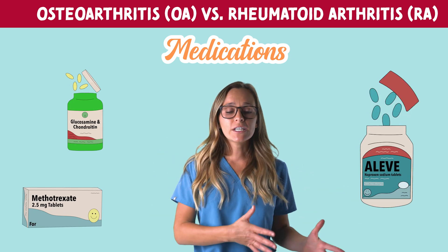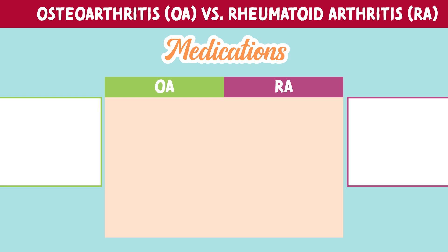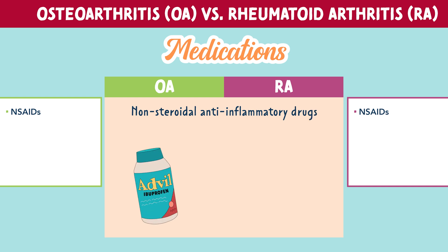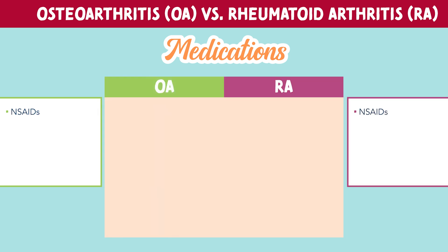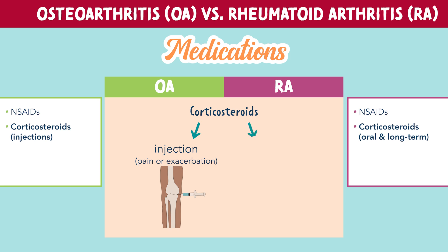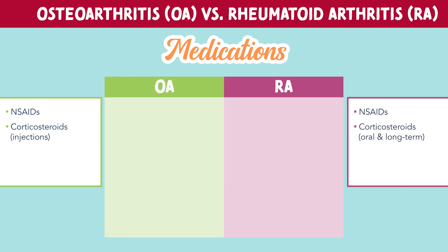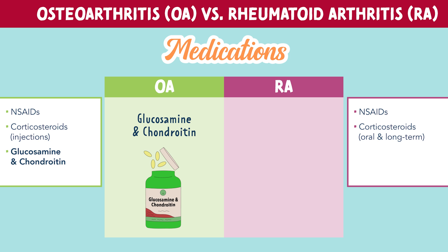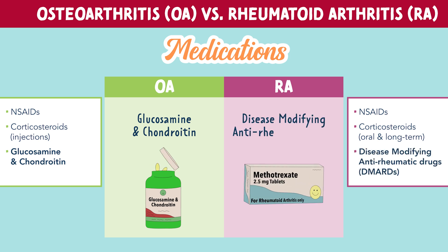Let's look at the commonly used medications for each type of arthritis. Patients with both OA and RA will benefit from non-steroidal anti-inflammatory drugs — examples include ibuprofen (Advil) and naproxen (brand name Aleve) — these relieve pain and inflammation. OA and RA are both treated with corticosteroids. OA patients may benefit from intra-articular injection of steroids for rapid relief of pain, while RA patients are often on oral steroids for long-term management. Other drugs for OA include glucosamine and chondroitin supplements, which can improve joint health. RA patients will benefit from disease-modifying anti-rheumatic drugs, or DMARDs, used for long-term management.